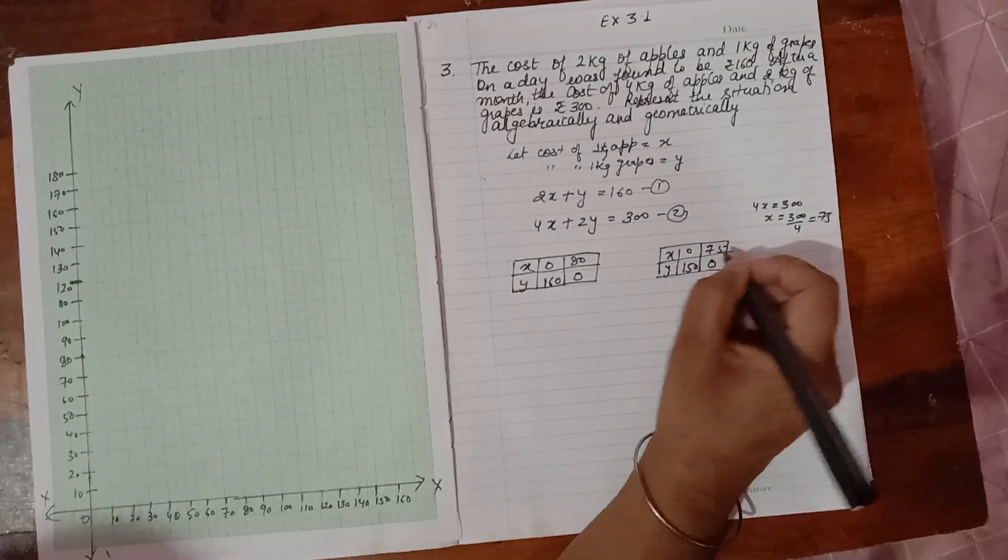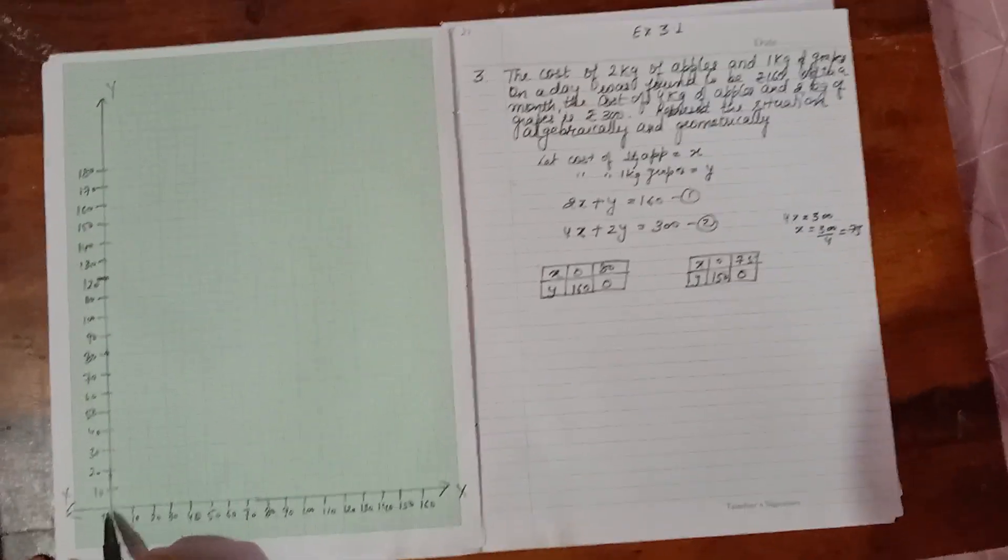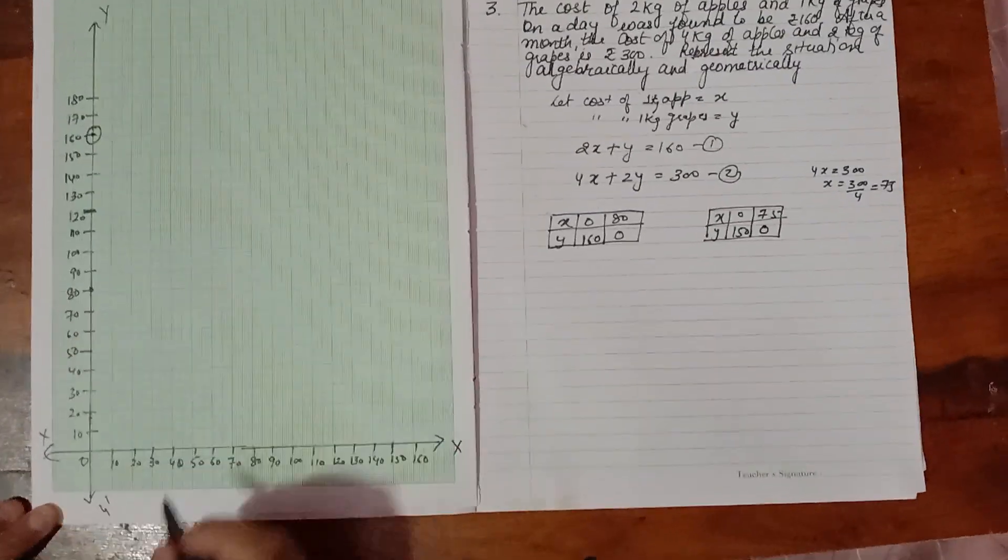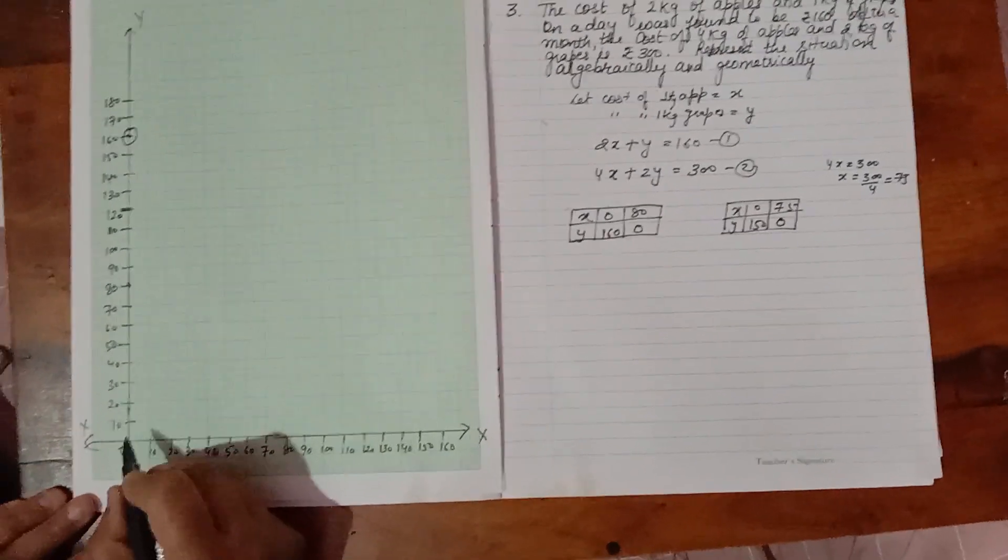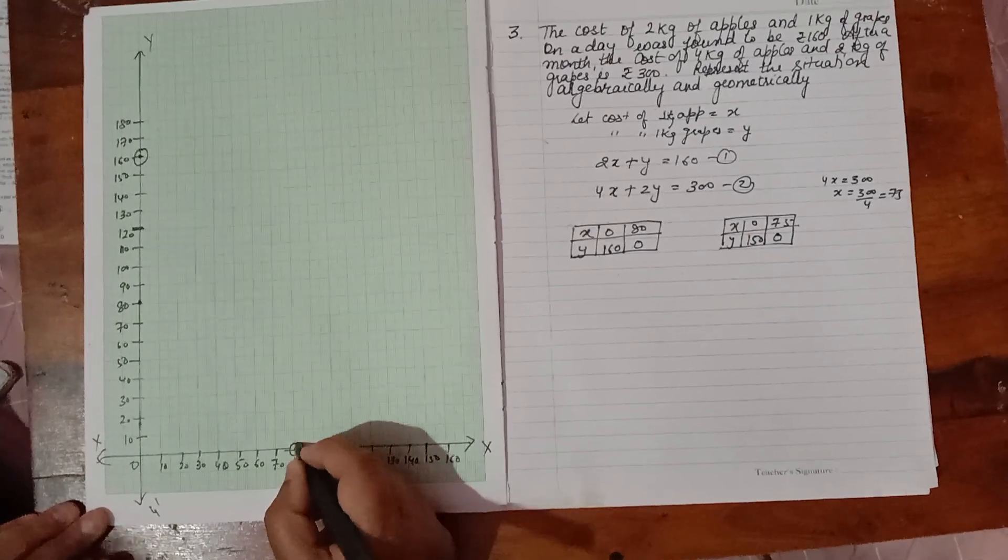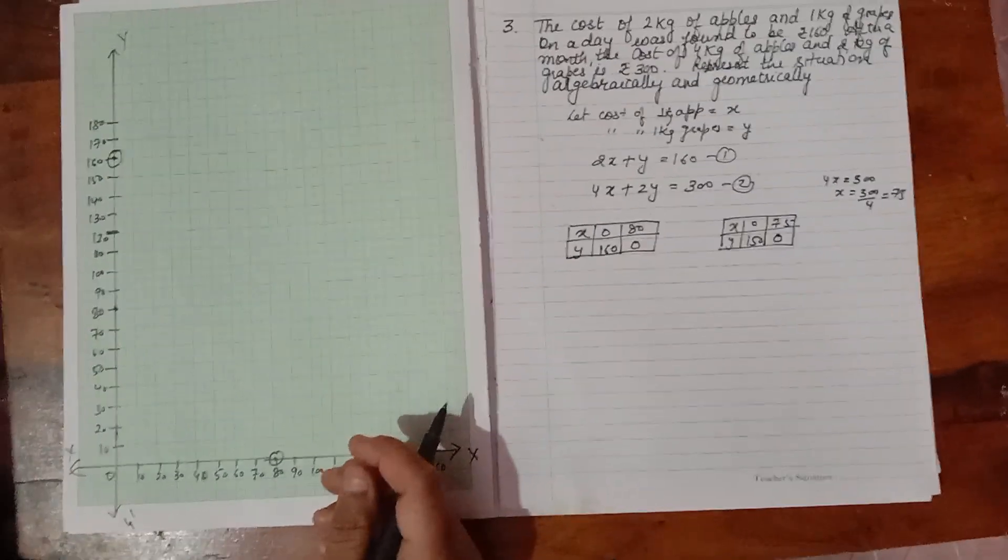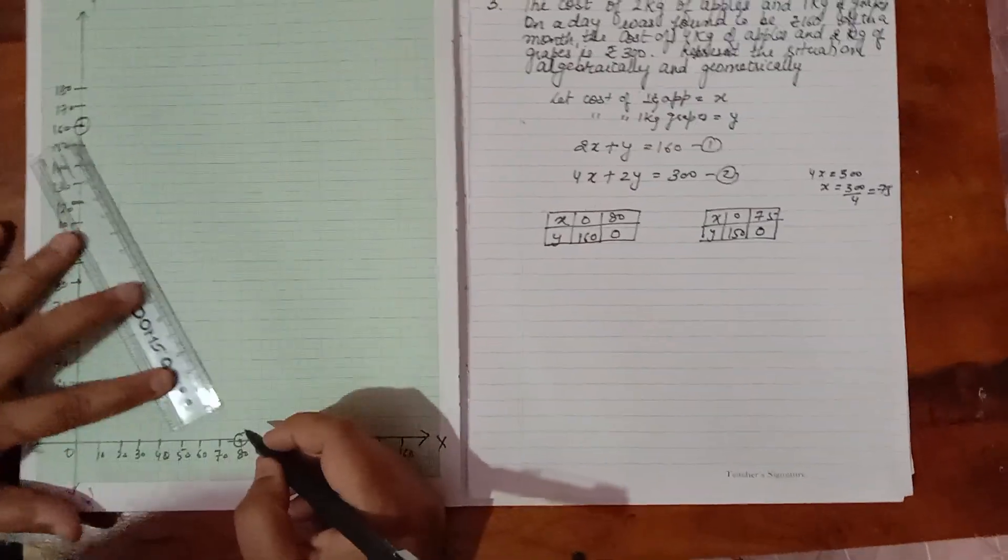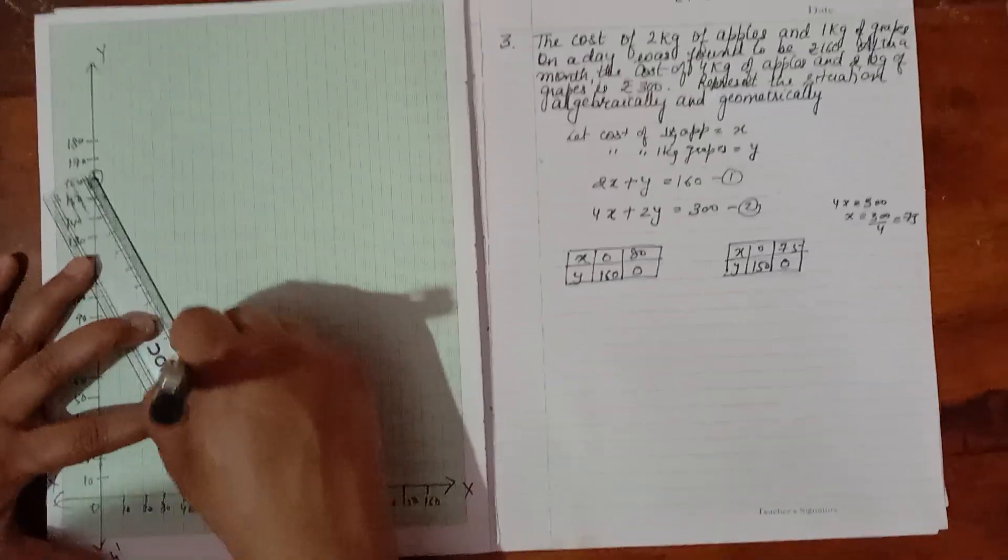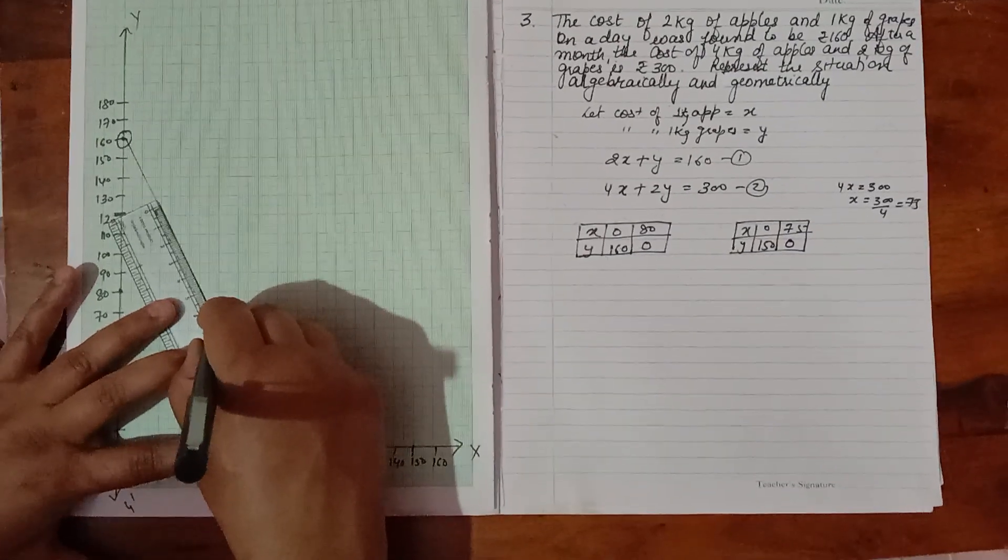Now you have to plot the graph. When X is 0, Y is 160, so one point will come here. When X is 80, Y is 0, so one point will come here. With the help of a scale, you have to join it carefully. A big scale you will take for this question and it will be good.